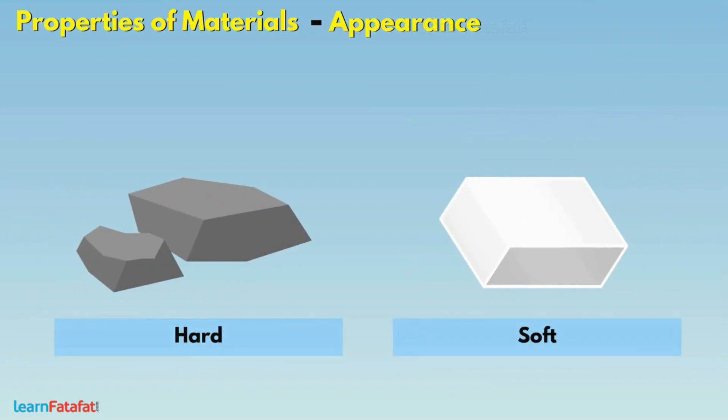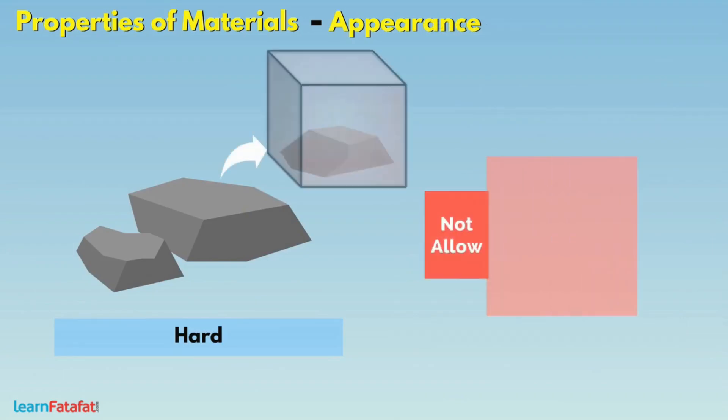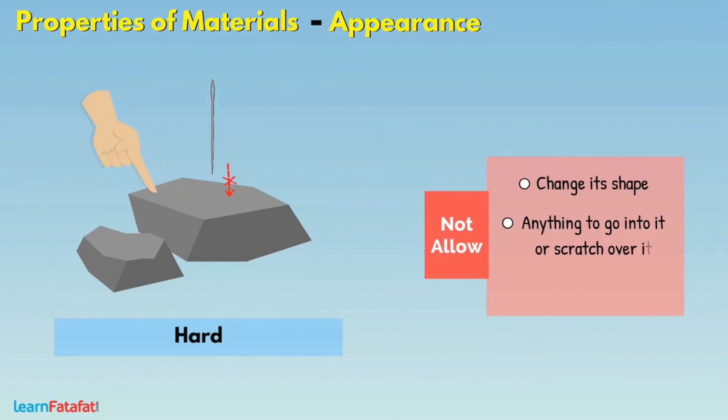With the term hardness, we mean that the material does not allow to change its shape. It does not allow anything to go into it or scratch over it. It does not break easily.